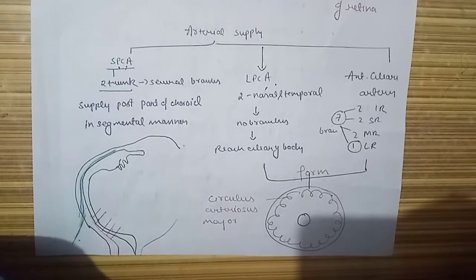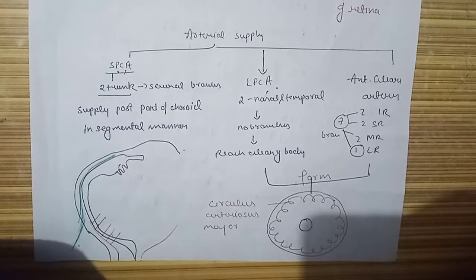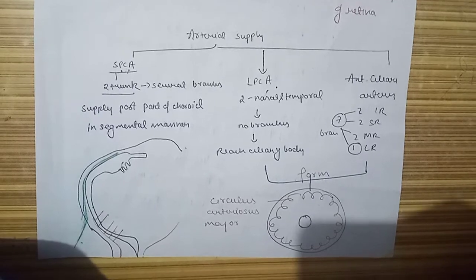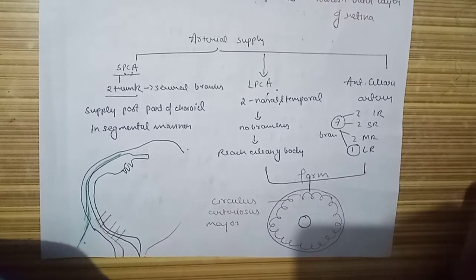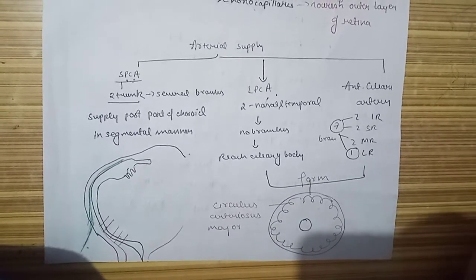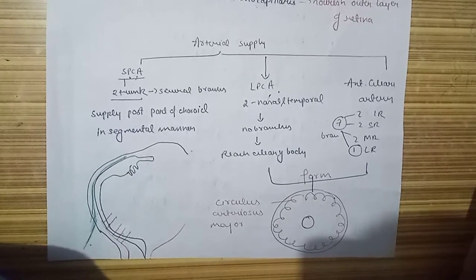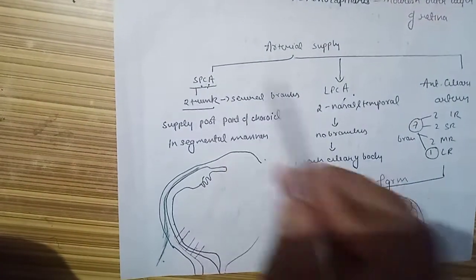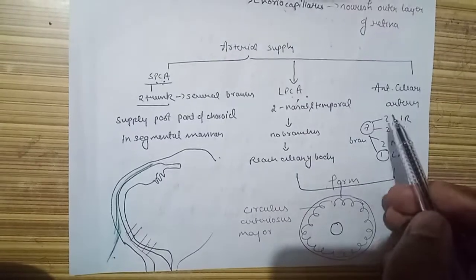Hello everyone. Today we will discuss the arterial supply of the uveal tract. The arterial supply of the uveal tract is mainly derived from three sets of arteries: two being posterior ciliary arteries and one the anterior ciliary artery.